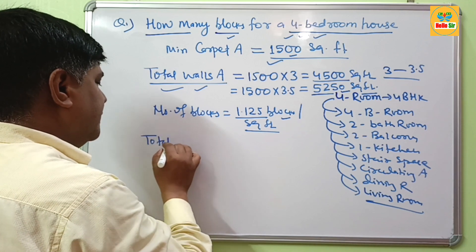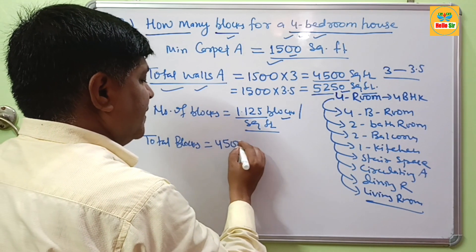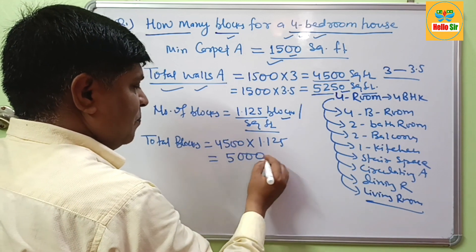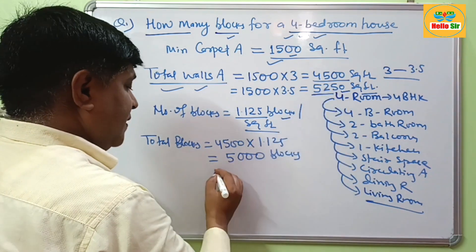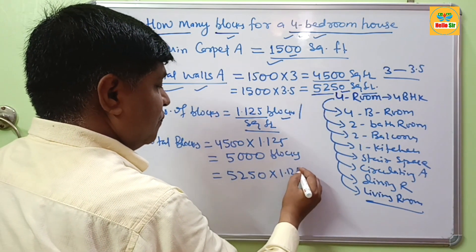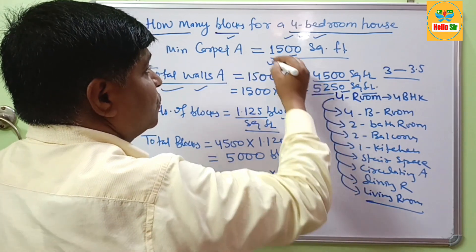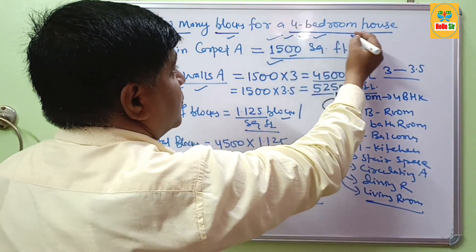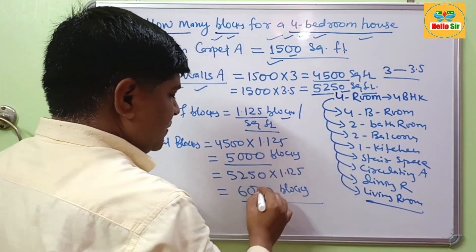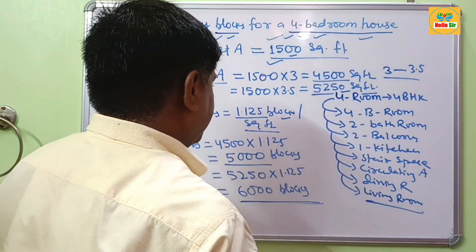To calculate the total blocks required: 4500 multiplied by 1.125 gives approximately 5000 blocks, and 5250 multiplied by 1.125 gives approximately 6000 blocks. So if you want to construct a 4-bedroom house, you will require about 5000 to 6000 concrete blocks. Thank you.